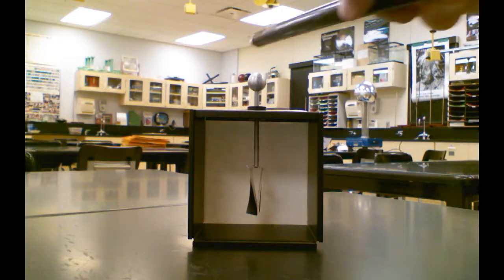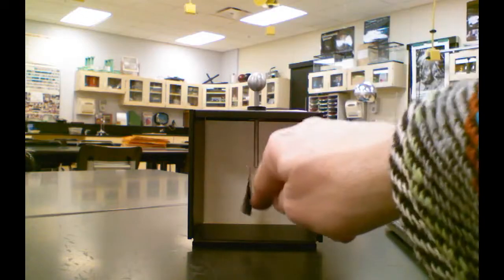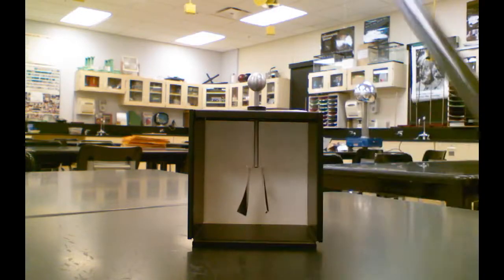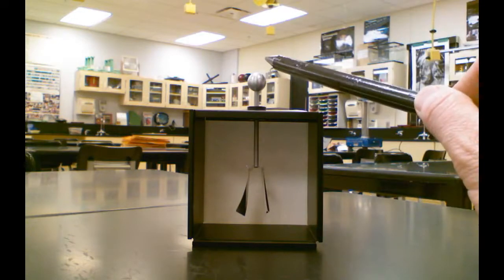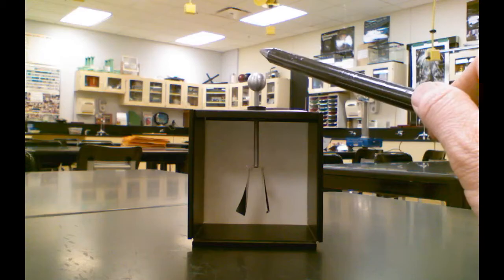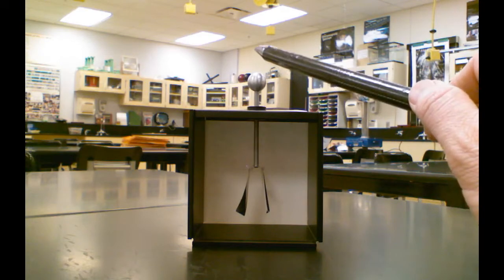When I bring this close to the top but not touching, what happens is the neutral electroscope, if this rod is, say, positively charged, the electroscope is neutral and has billions of positives and negatives. The negatives move up toward the top, the positives move toward the bottom.